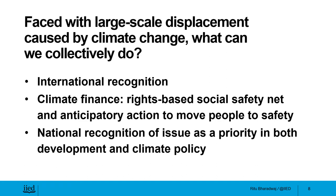So what can we collectively do to address it? We first need international recognition of this problem — that a nexus exists whereby climate change impacts lead to distress migration, which exposes people to vulnerabilities of slavery and trafficking, along with several secondary and tertiary impacts. There is a need to understand the dimensions of these impacts, and to acknowledge them in international policy discourse, particularly within the UNFCCC framework. There should also be a willingness to provide climate finance to strengthen the rights-based social safety nets of these vulnerable communities.